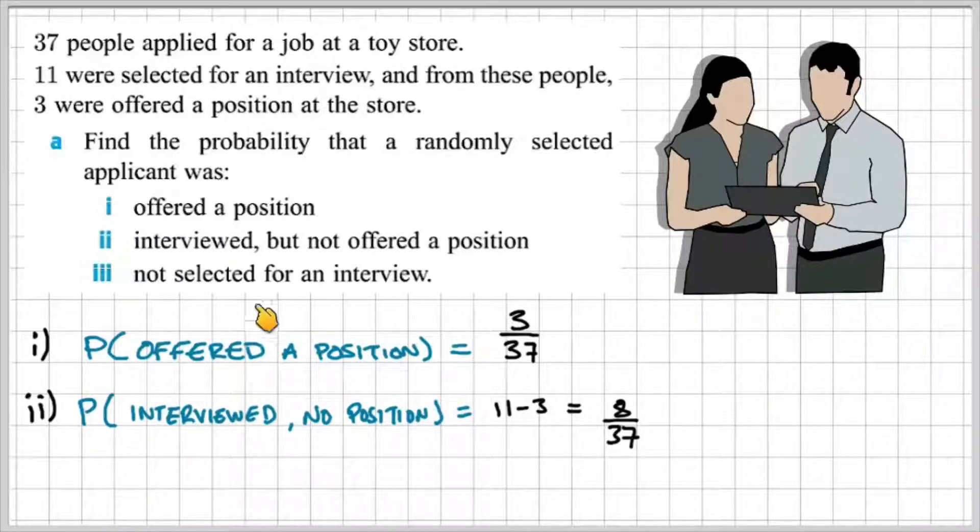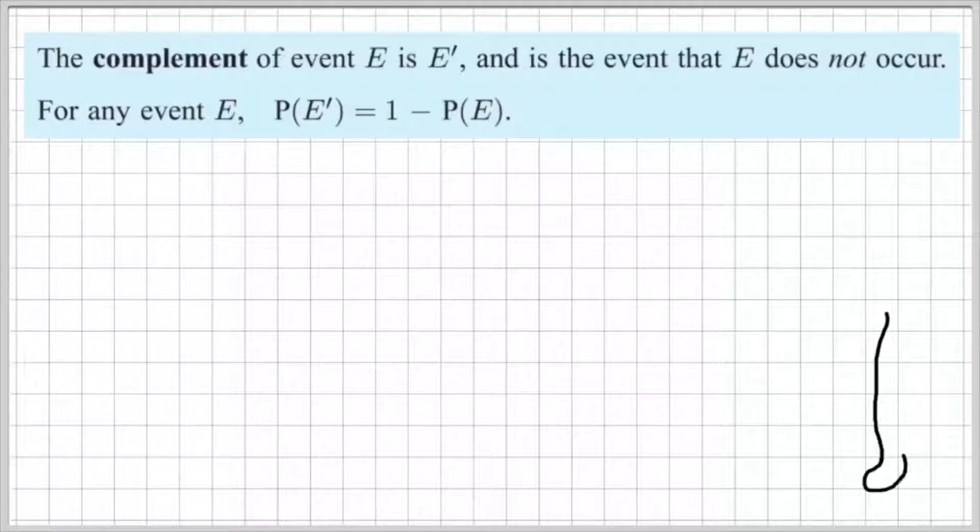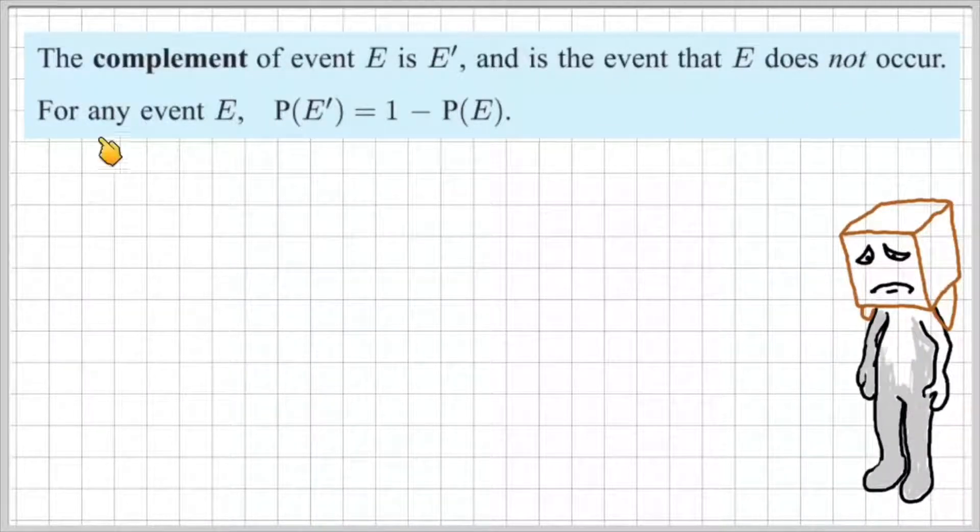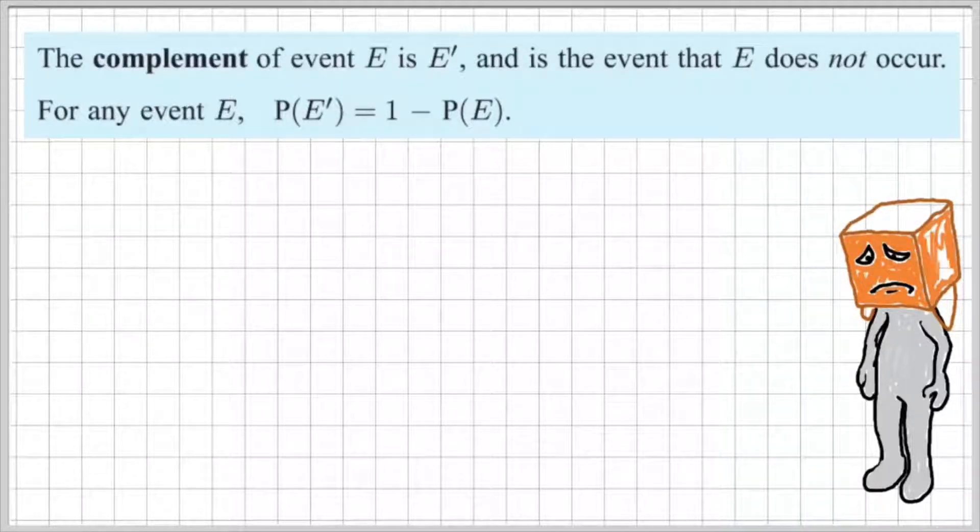Okay, for part 3, not selected for an interview, I'm going to be talking about the complement of an event. So the complement of an event E is E dash. And this is the event that E does not occur. For any event E, the probability of E dash is 1 minus the probability of the event occurring.